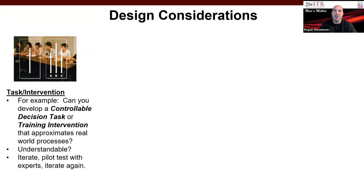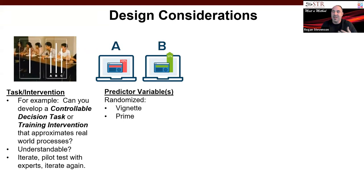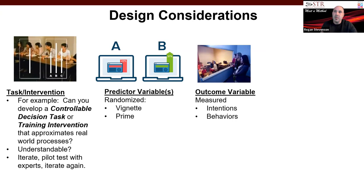When considering predictor variables, you're going to randomize but you'll either use a vignette or a prime. In strategy research, we've seen both used. Vignettes are more like a storyboard — maybe a news article or reading about a best practice, framing a particular way of doing things. A prime would be something trying to change the way a mindset is. For outcome variables, there are two types: intention-based or behavioral measures. One weakness with intention-based measures is that people might intend to do something but not actually behave that way. There's been a move in behavioral economics toward more behavioral measures, and this is an opportunity for strategy research.